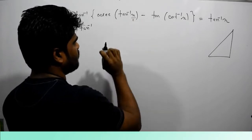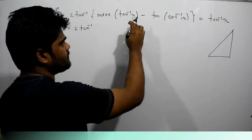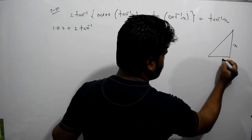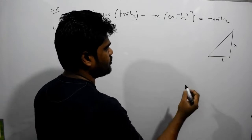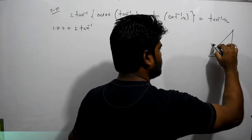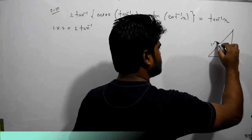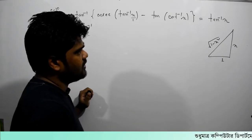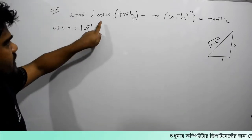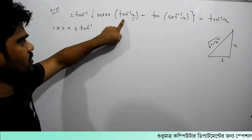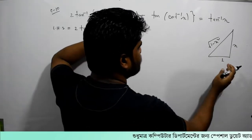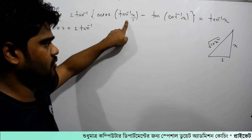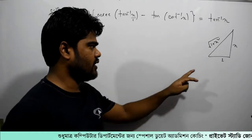Then the tan inverse is x by 1. The tan is less than 1. So the root is 1 minus x square root. The root means tan inverse is 2, and the root is 1 plus x square root.